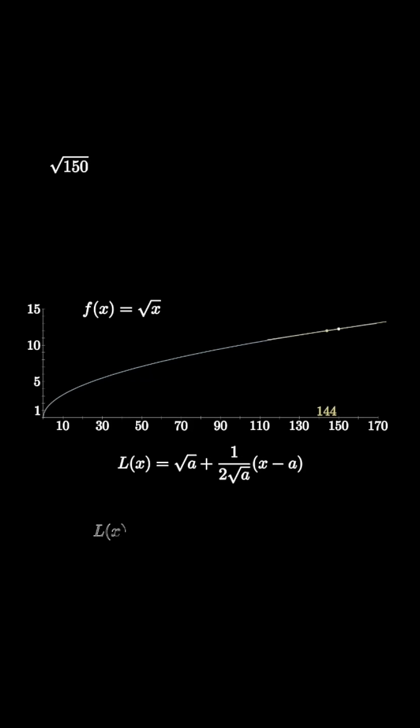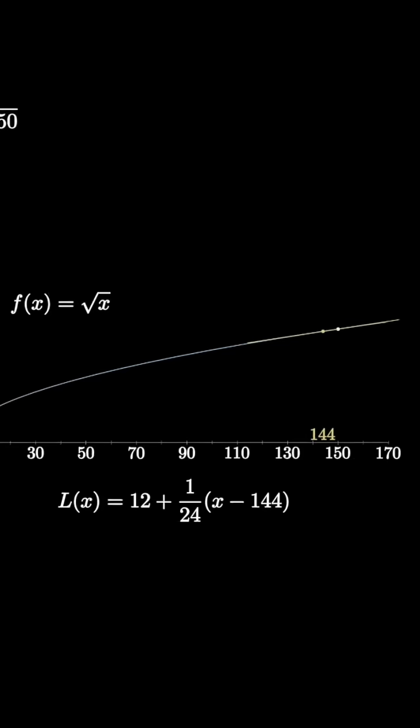we get the linear approximation as 12 plus 1 over 24 times x minus 144. As we zoom in, we see that the linear approximation looks a lot like the square root curve.